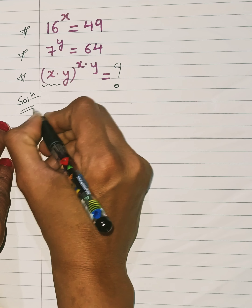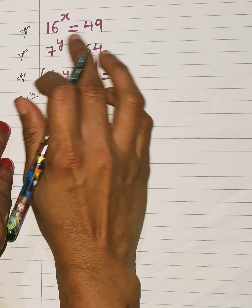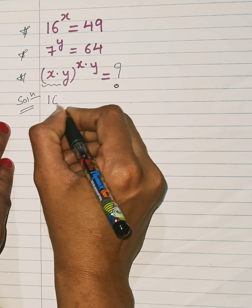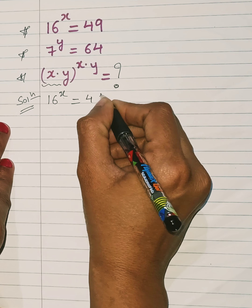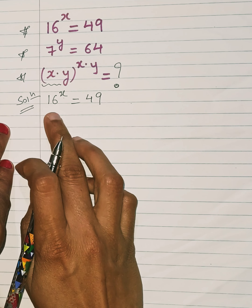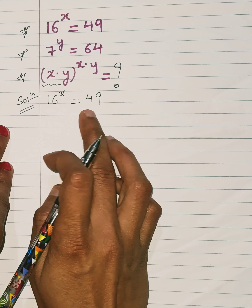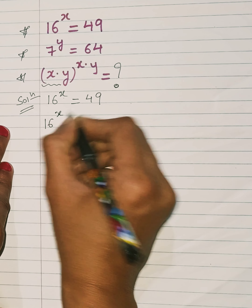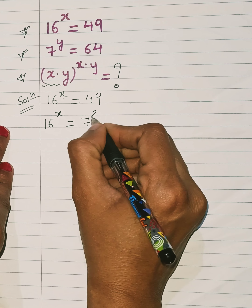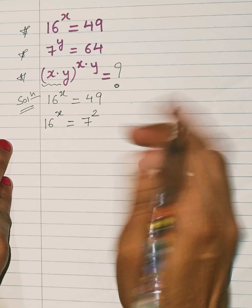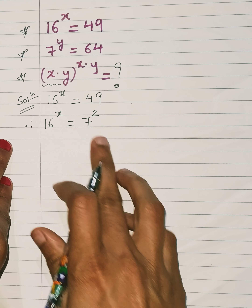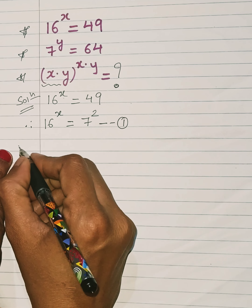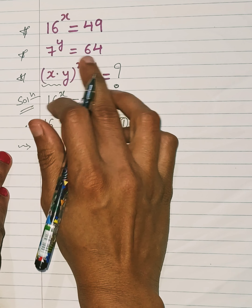Moving ahead with the solution. The first equation given to us is 16 raised to x equals 49. Now, 49 is 7 squared, so this can be rewritten as 16 raised to x equals 7 squared. This is our first equation.